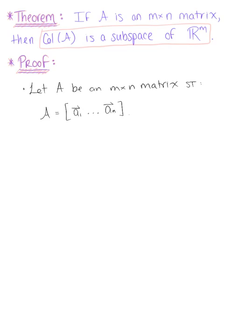To prove that the column space of matrix A is a subspace, we need to recall a theorem from section 4.1. That theorem states that if vectors V₁ through Vₙ are in V for some vector space V,